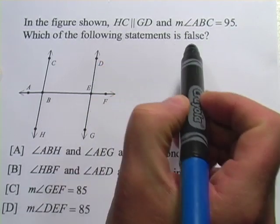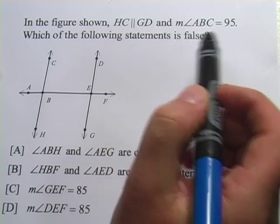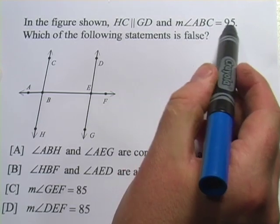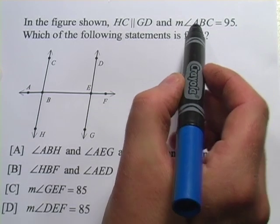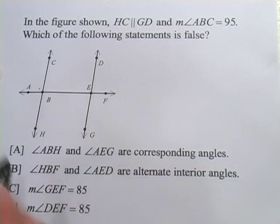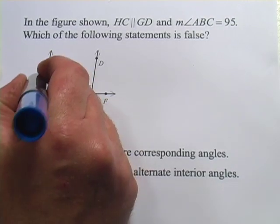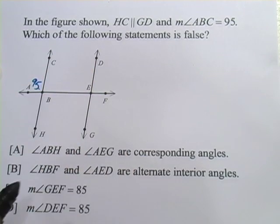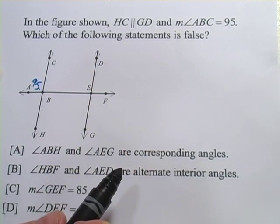So it's going to ask us then to find a false statement. Before we do anything, read any of those, I'm going to write in the information that I know. The measure of ABC, so ABC, that's this one right here, is 95. Now, I've got one piece of information here, but I can actually write in a lot.